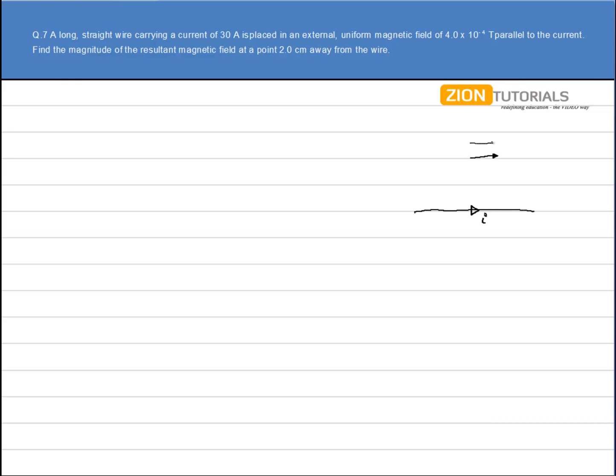The magnetic field let's say is in this direction. Now due to this current we do have a magnetic field and the direction of the magnetic field will be manipulated by right hand thumb rule. Stretch your thumb in the direction of the current and the curling of your fingers shows the direction of magnetic field.